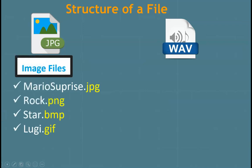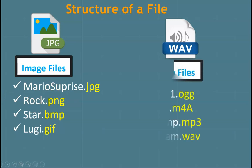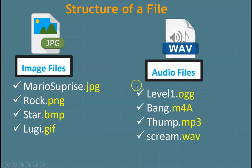When you think about the number of image files available to us, there are quite a few. Here are some very common ones we typically run into when manipulating them for our game: jpg, png, bmp, and gif. These are image files that are very commonly used within our games. When we talk about audio files — whether we are creating special effects, booms, bangs, or importing music we've created — the following file extensions are synonymous with audio files: OGG, M4A, MP3, and WAV.